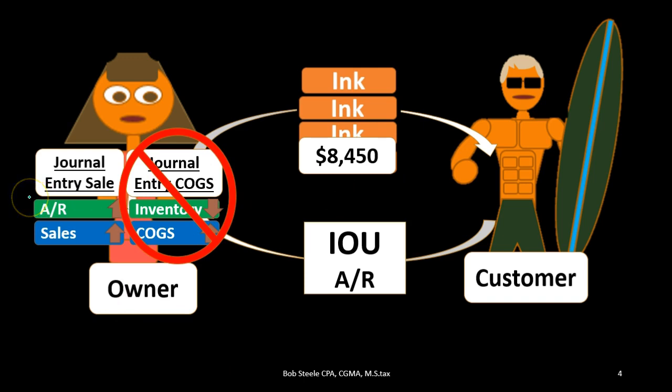Why? Typically because our system is not sophisticated enough. We may have a clerk making the sale who only knows the sales price. Unless they have a scanner or something that knows the cost of goods sold, they don't know what the cost is and therefore can't record it — they're focused on completing the transaction. Therefore, unless there's a sophisticated system, usually a digital one, a periodic system might be used. If we do have a sophisticated system, we would record this at the point of sale using a perpetual system.